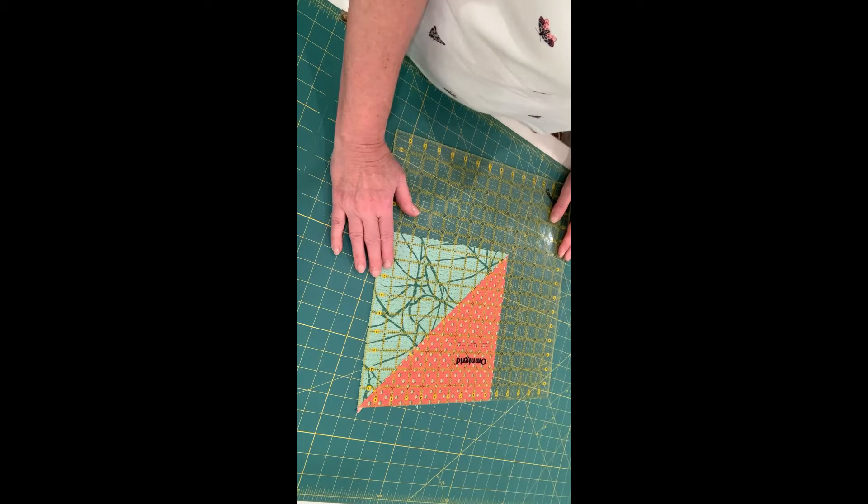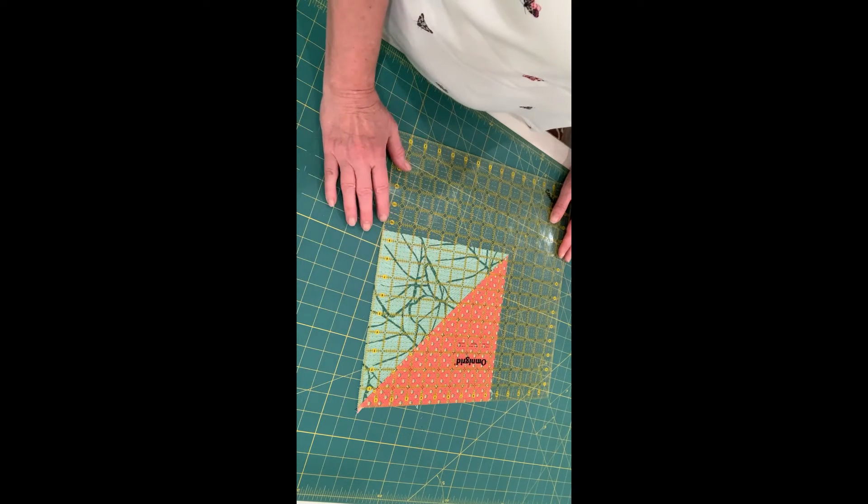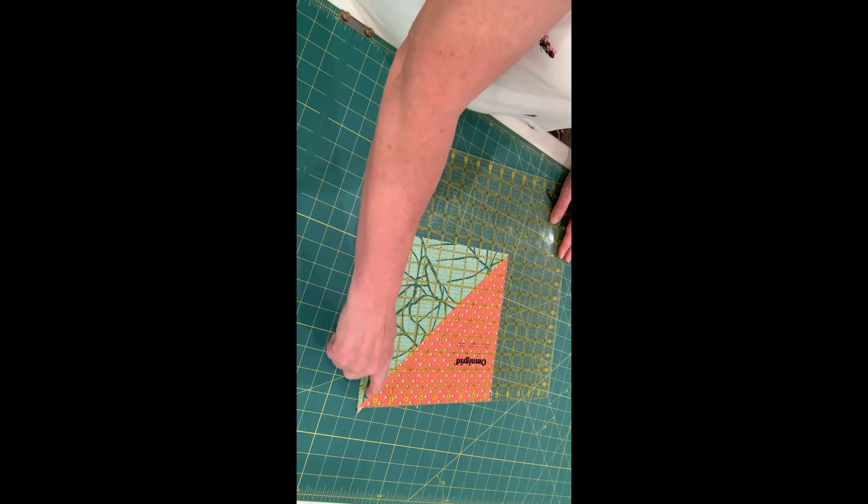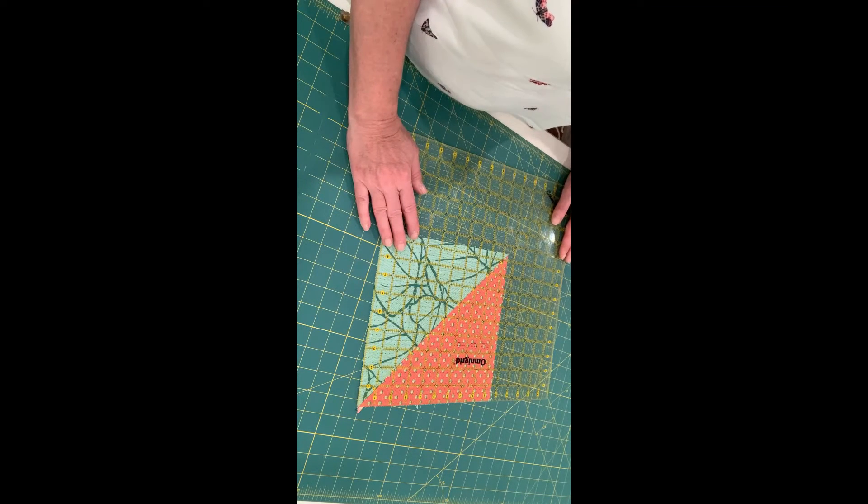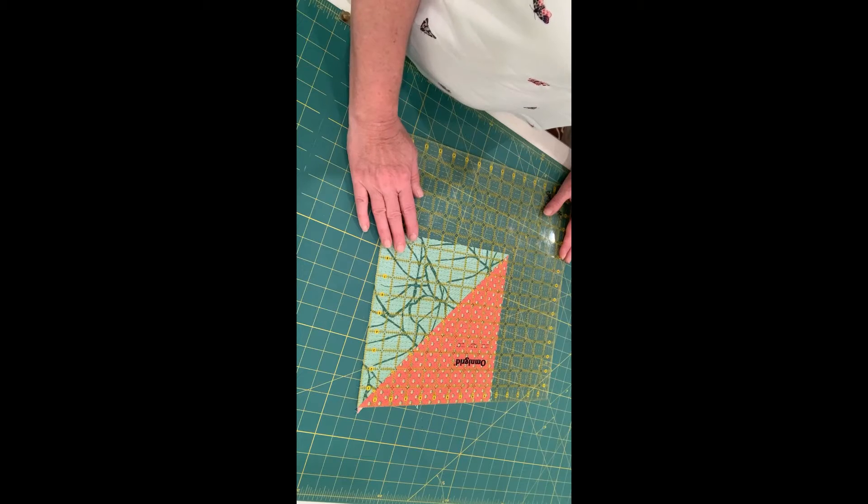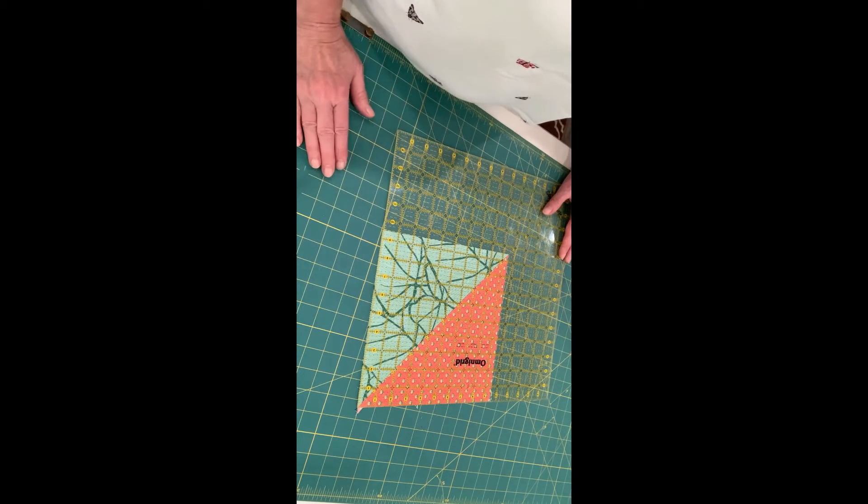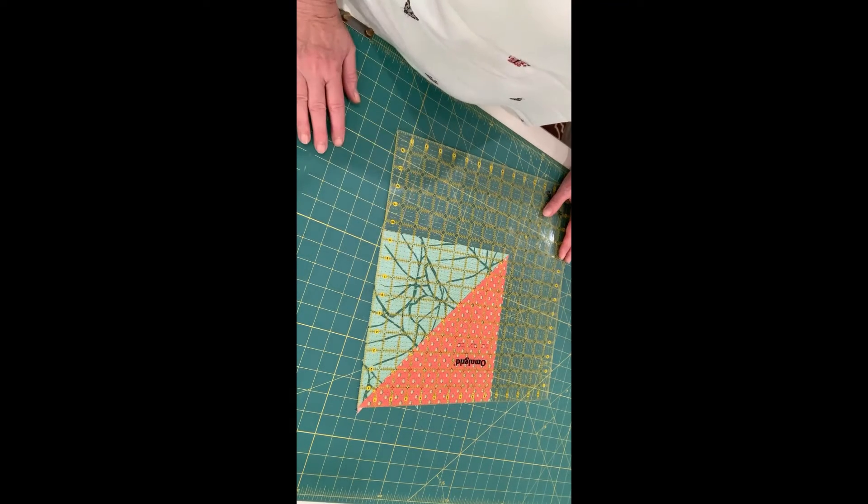The most important thing is to make sure that the diagonal line stays on the center of the block. And that way, your square will remain square and it will be a perfect 9 1⁄2 inch square.